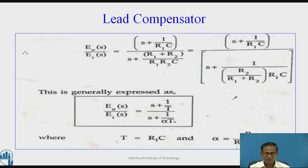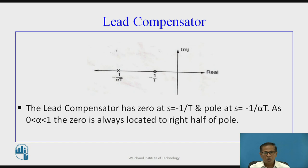In this transfer function, one zero is present at s = −1/T and one pole is present at s = −1/αT. This is the pole-zero diagram for the lead compensator. Here, α is greater than 0 and less than 1. Therefore, the zero is always located to the right of the pole.